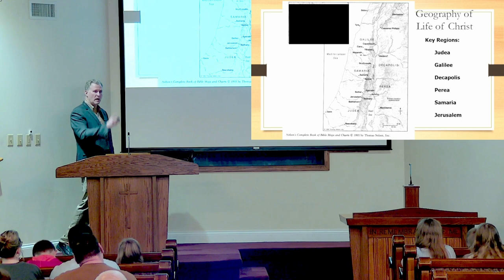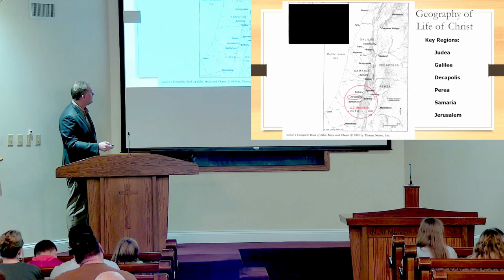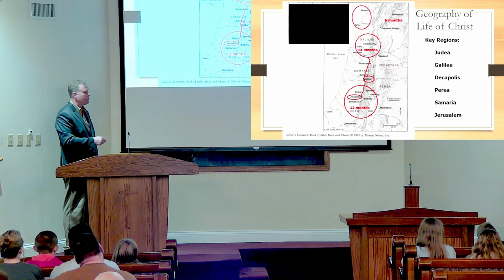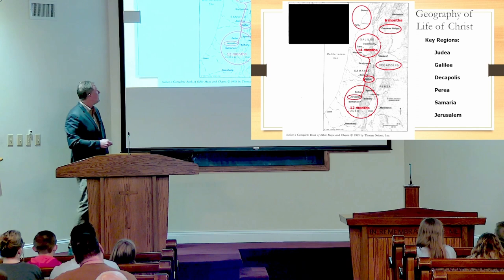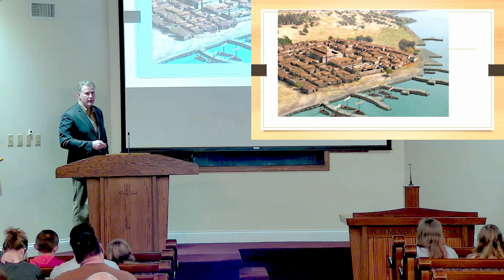There's only one Roman city on the western side of the Jordan River — a beautiful city whose remains are stunning — called Scythopolis or Beth-Shean. Where did Jesus spend most of his time? He spent approximately 12 months in and around Jerusalem, 14 months in Galilee, and six months in other places, including predominantly Gentile areas.